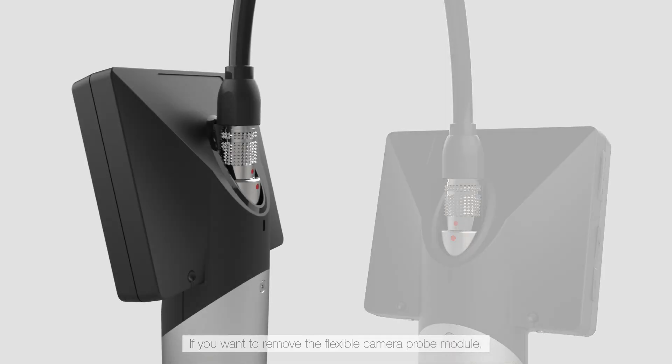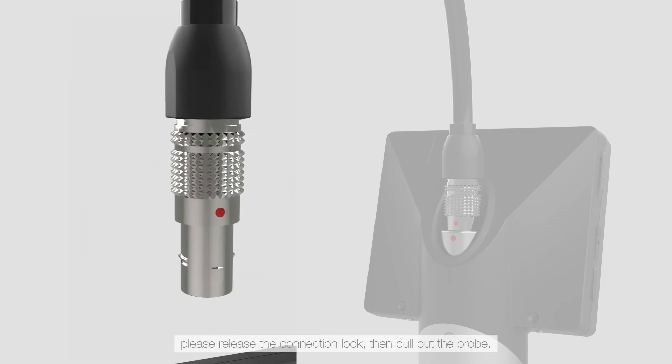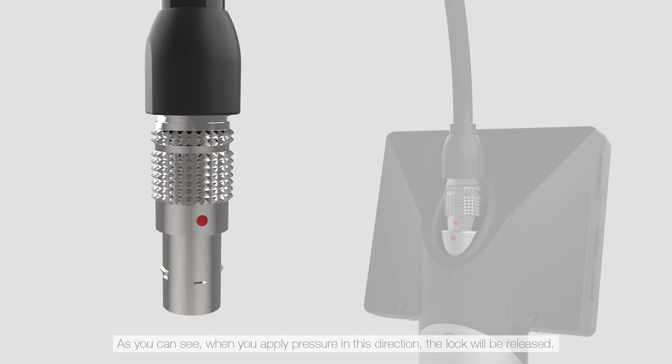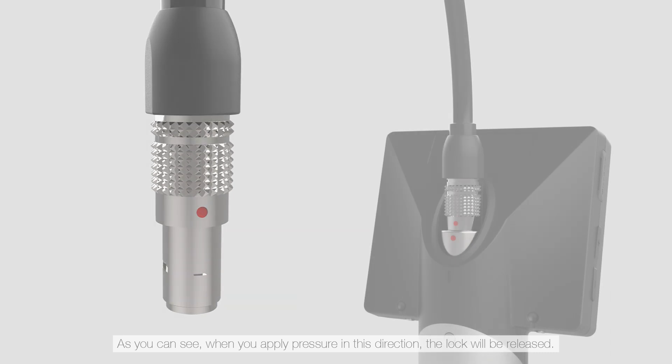If you want to remove the flexible camera probe module, please release the connection lock, then pull out the probe. As you can see, when you apply pressure in this direction, the lock will be released.